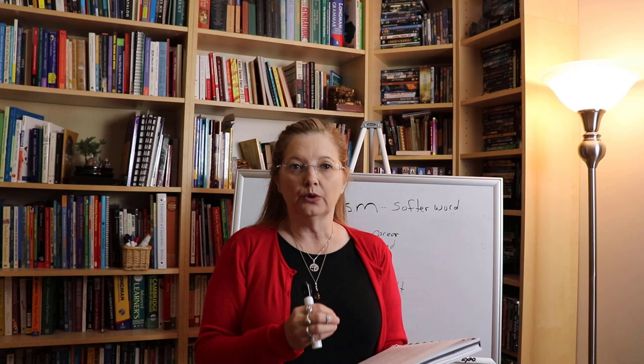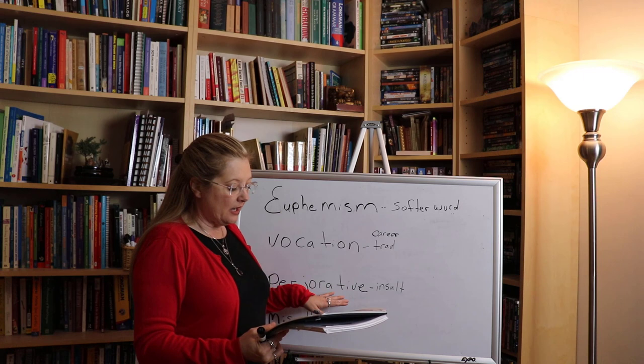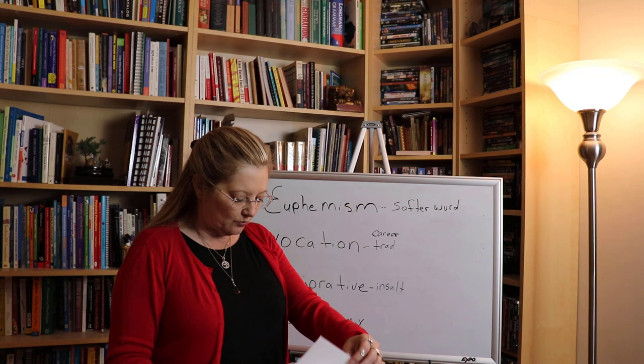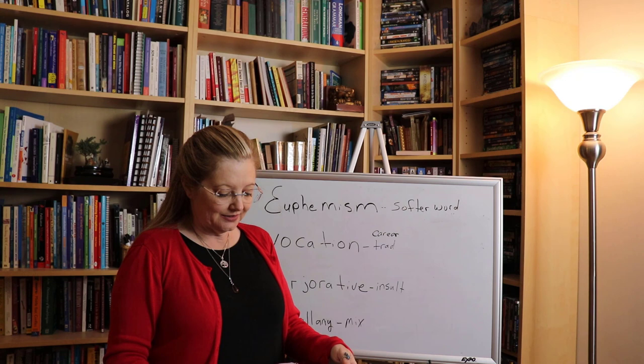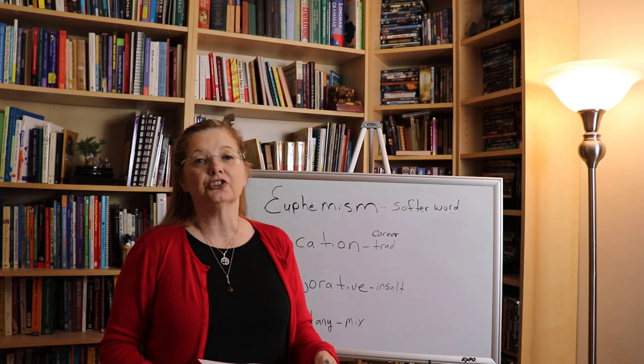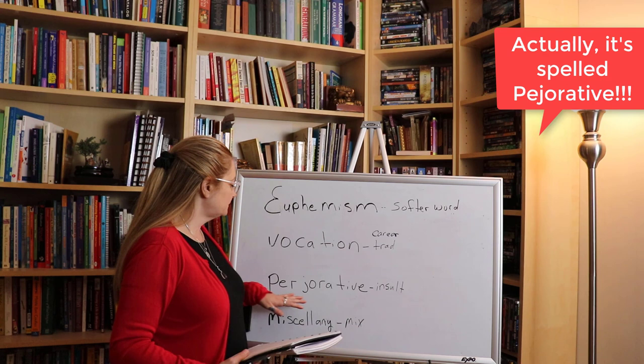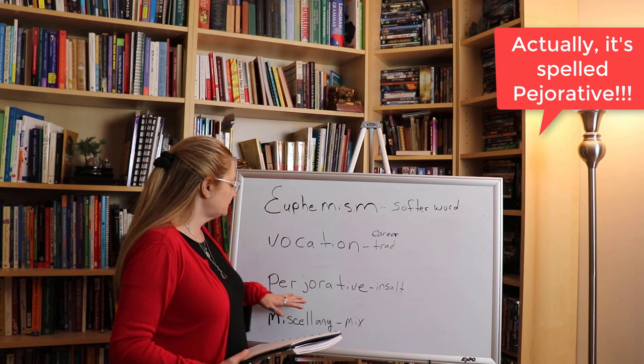So that covers euphemism and vocation. Now we move on to 'pejorative,' which appears when we turn the page to page two. Pejorative is what Brother Dill does. It's not an actual word in the text, but you need to understand it, which is why it's given to you. So let's learn this word — pejorative, spelled P-E-J-O-R-A-T-I-V-E.